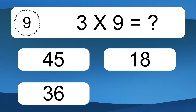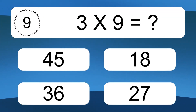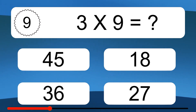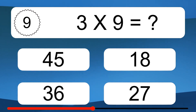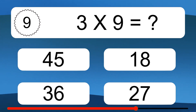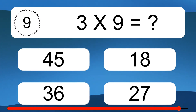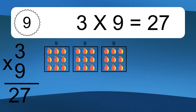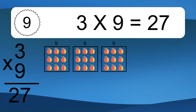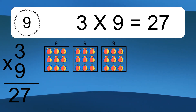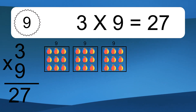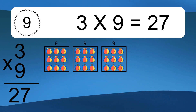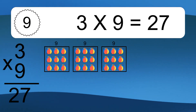3 times 9 equals what? 3 times 9 equals 27. We have 3 boxes, and each box has 9 colorful balls inside. If you count all the balls in all the boxes together, you will have 3 times 9 balls. This equals 27 balls.